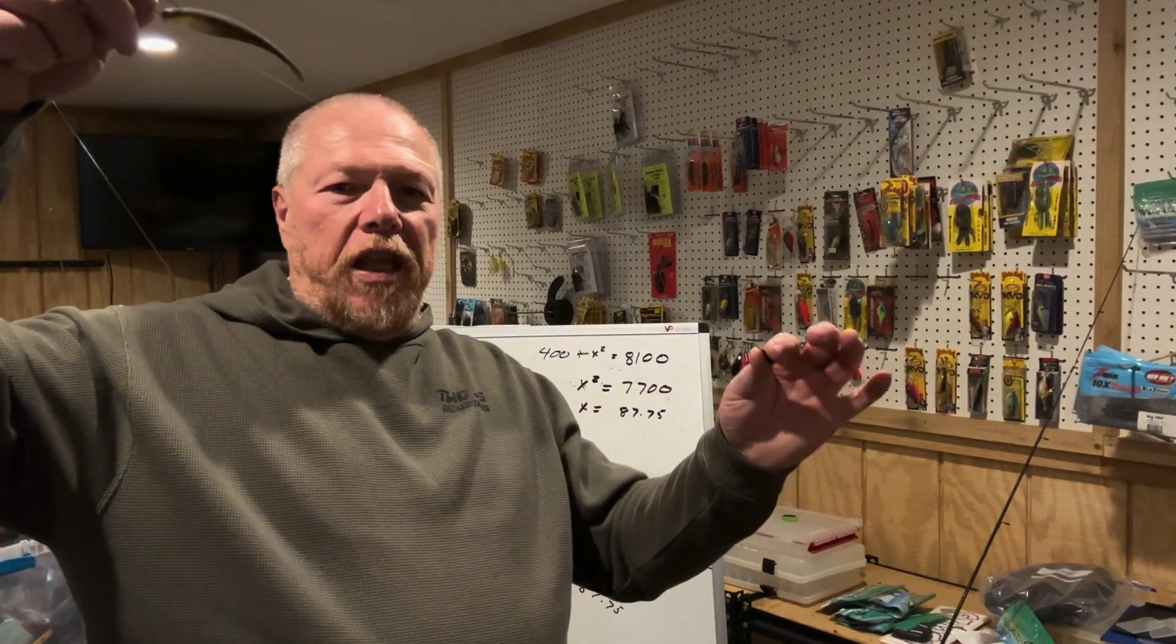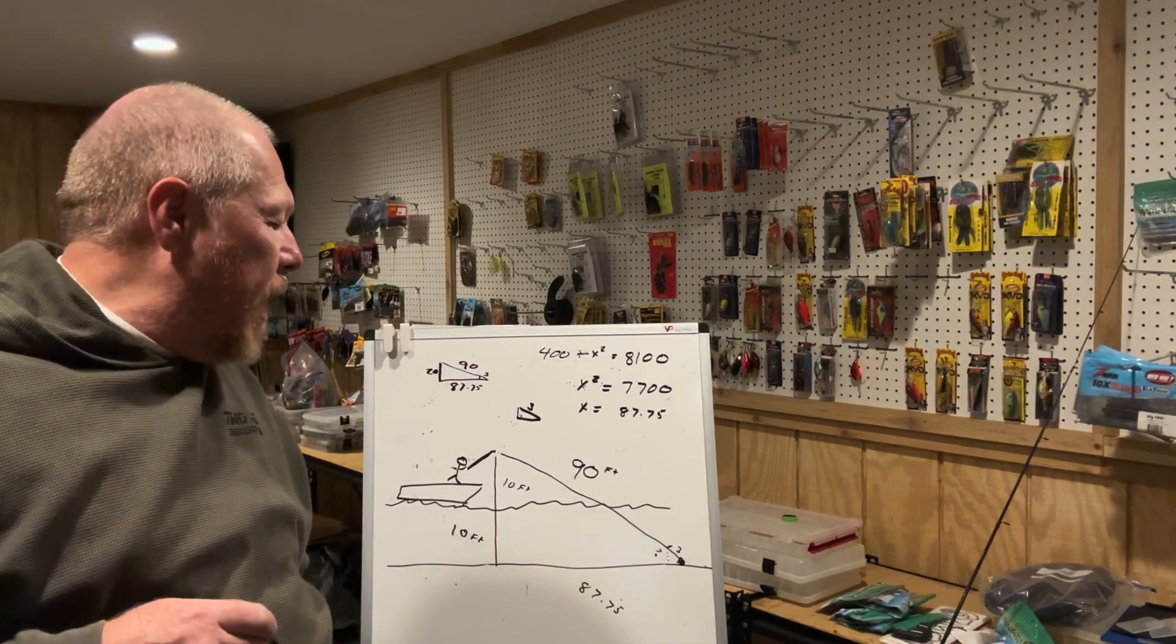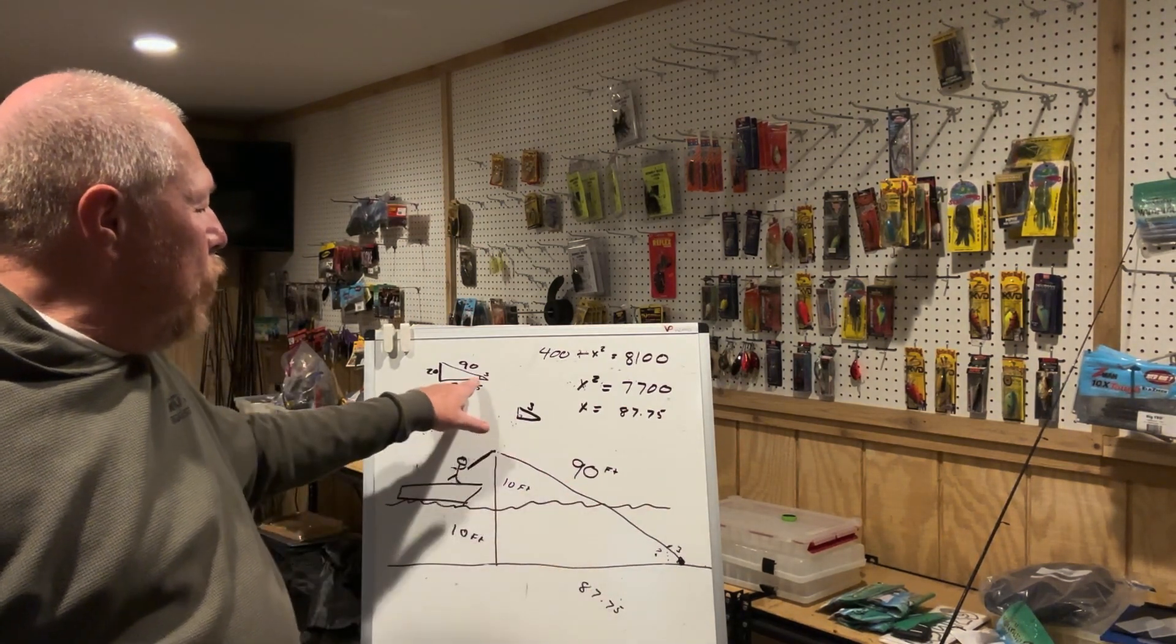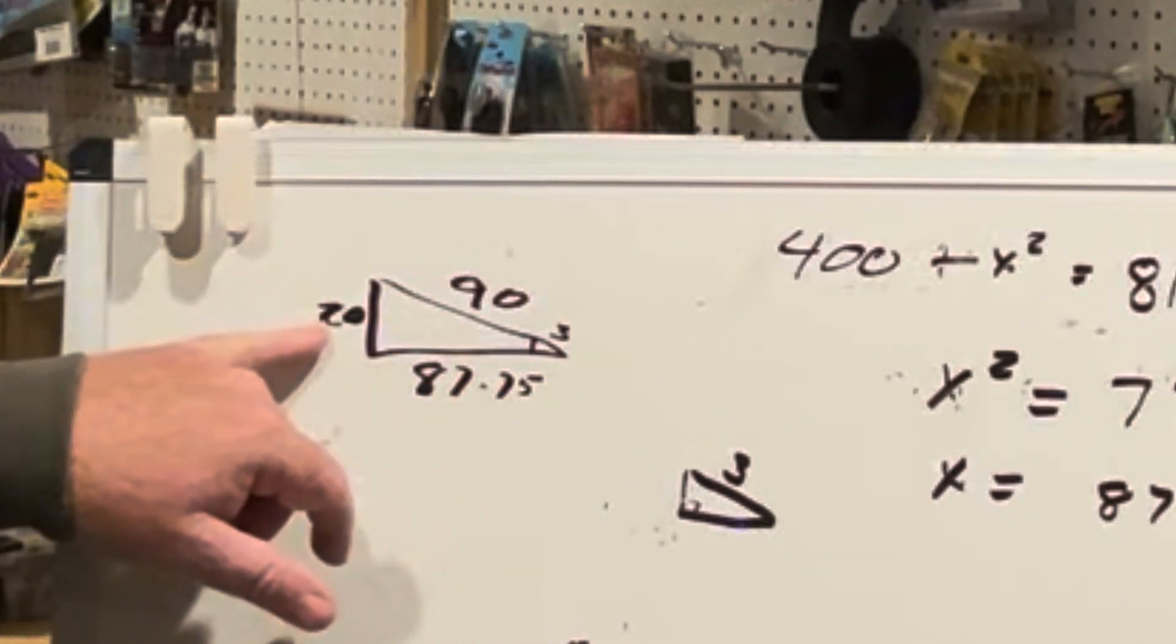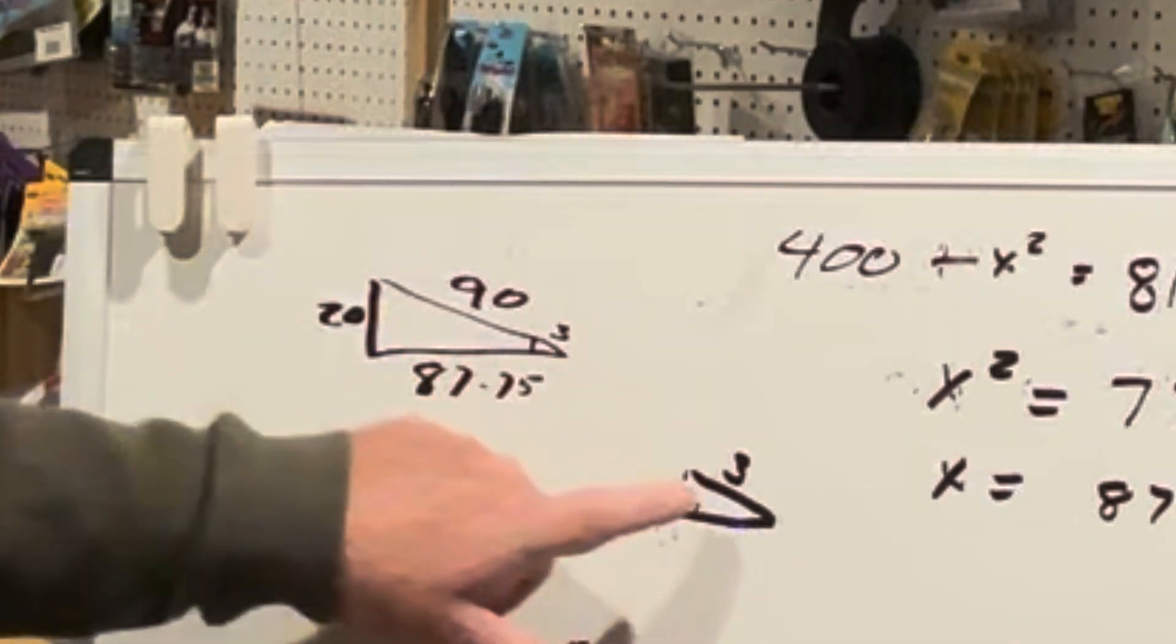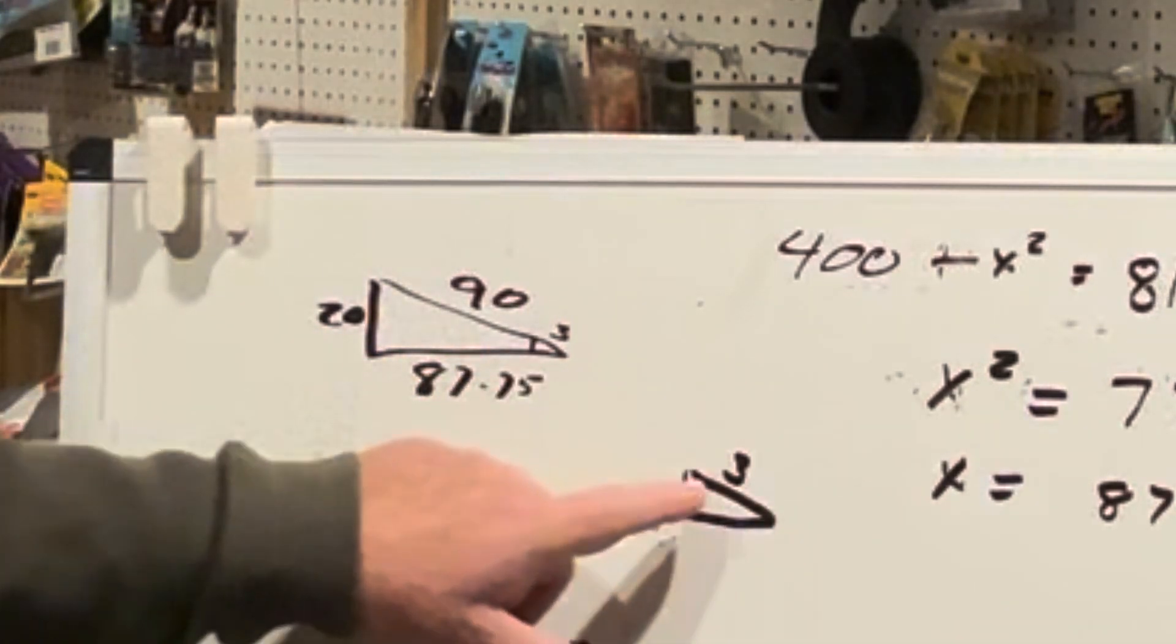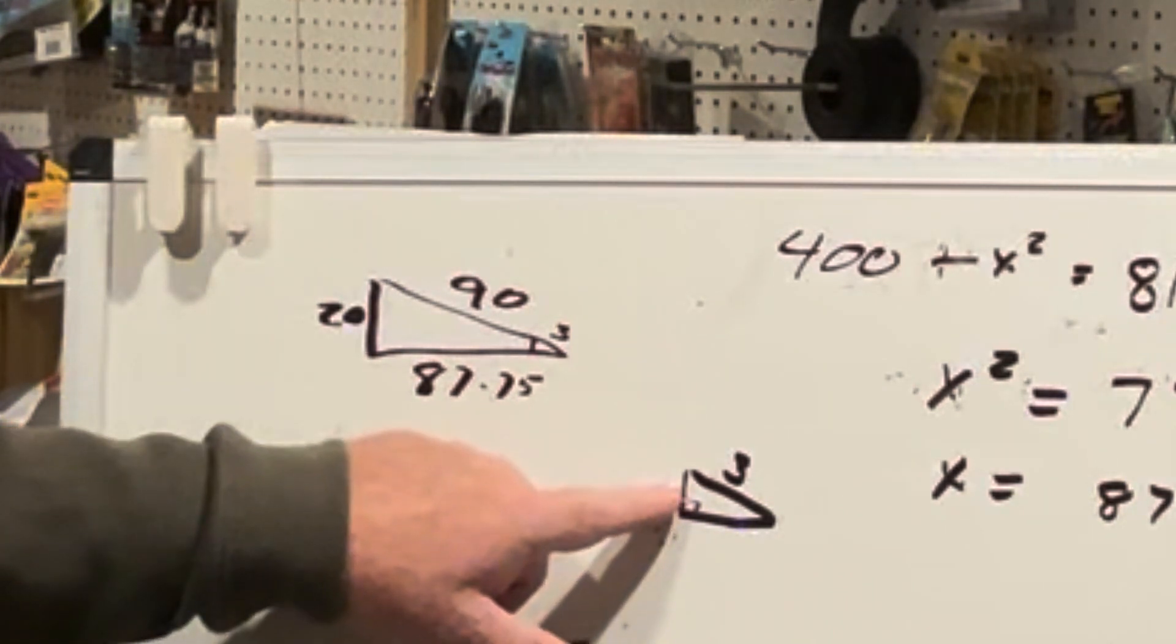But when I make my cast, that two feet then becomes a much shallower angle. And if you use the proportion where I'm making a 90-foot cast over a 20-foot height, and I'm looking at that smaller proportion with a three-foot leader...